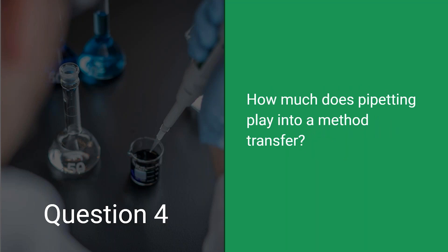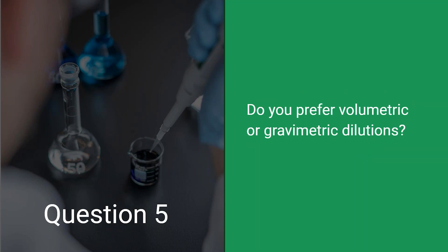How much does pipetting play into a method transfer? Pipetting can play into a method transfer — it's not necessarily the most significant problem, but can cause issues when transferring a method to a receiving laboratory. If there's a special technique or special materials of construction that are necessary, that will need to be communicated to the receiving laboratory. Do I prefer volumetric or gravimetric dilutions? My personal preference would be a volumetric dilution, as this is more time efficient and quicker in the laboratory. Gravimetric or volumetric dilutions should reasonably produce the same results, so for a good method it should not matter which route you go. You may choose one over the other based on material compatibility and availability of chemicals and standards.